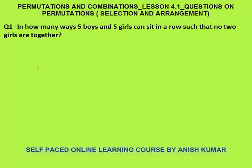First question: in how many ways can 5 boys and 5 girls sit in a row such that no 2 girls are together? Girls should not be together. So first we will arrange the boys. Let's say boys' seats are these — 5 boys in a row. In how many ways can they sit? We have to arrange 5 boys in a row. This place can be filled in 5 ways, any of the 5 boys can come, then 4 ways, and so on. So 5 boys can be arranged in a row in 5 factorial ways.